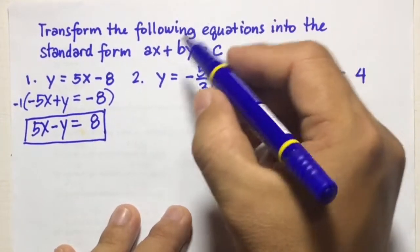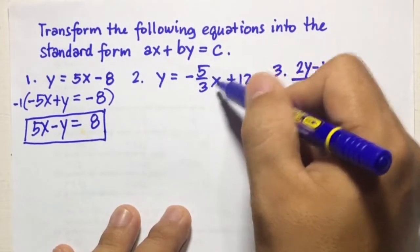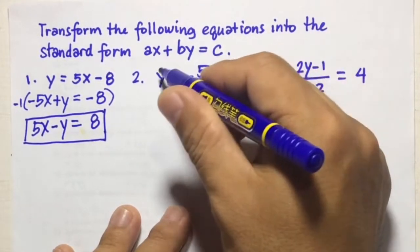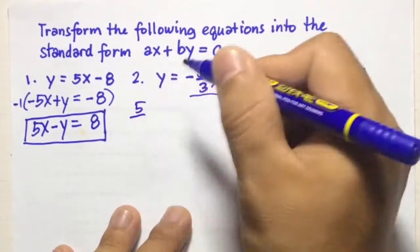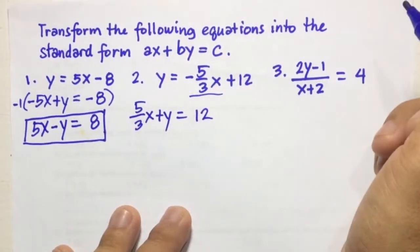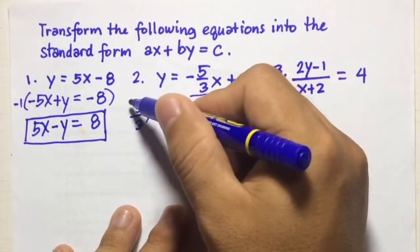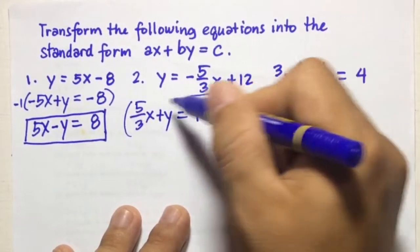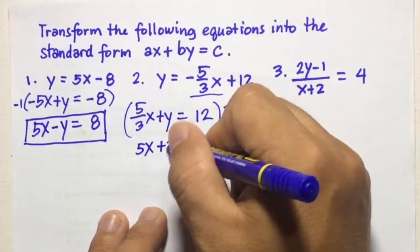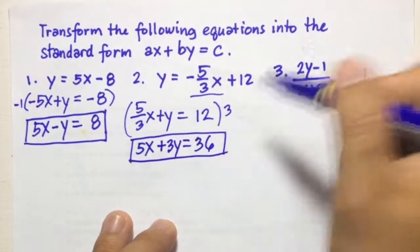Number 2: Y equals negative 5 over 3 X plus 12. We transpose the X term to the left side, giving 5 over 3 X plus Y equals 12. Since there is a denominator of 3, we multiply the entire equation by 3: 3 times 5 over 3 is 5X, 3 times Y is 3Y, and 3 times 12 is 36. So the answer is 5X plus 3Y equals 36.